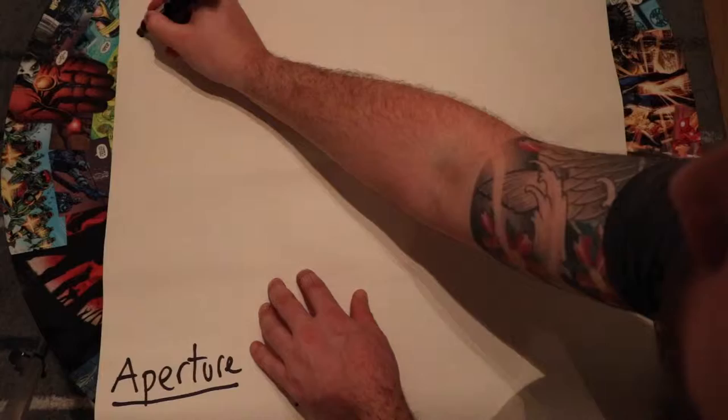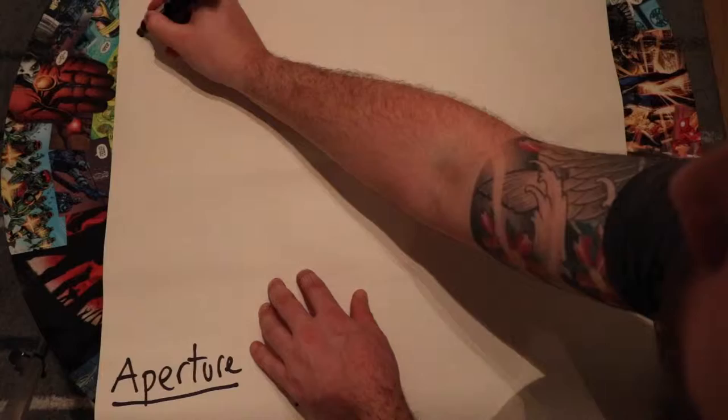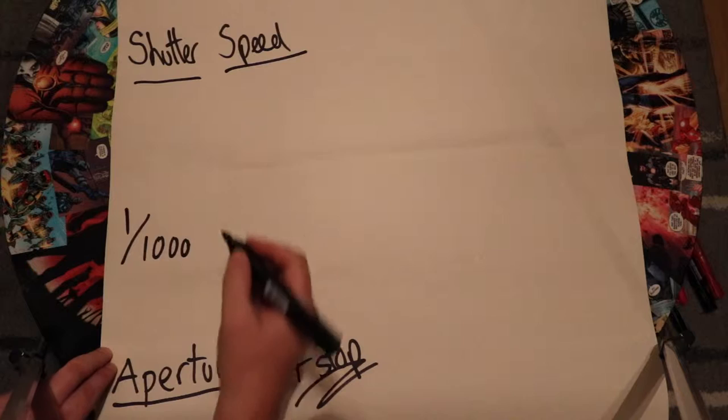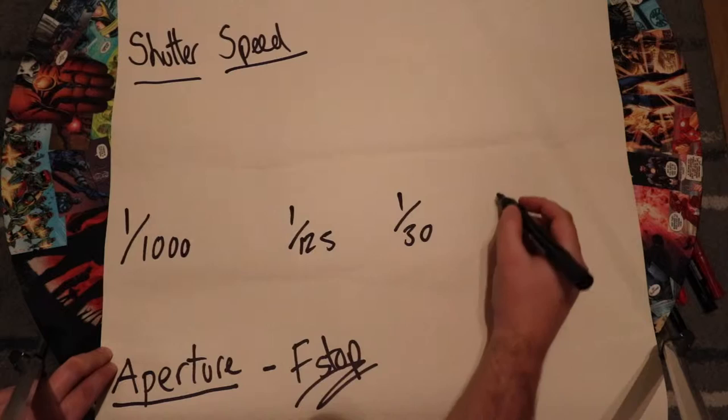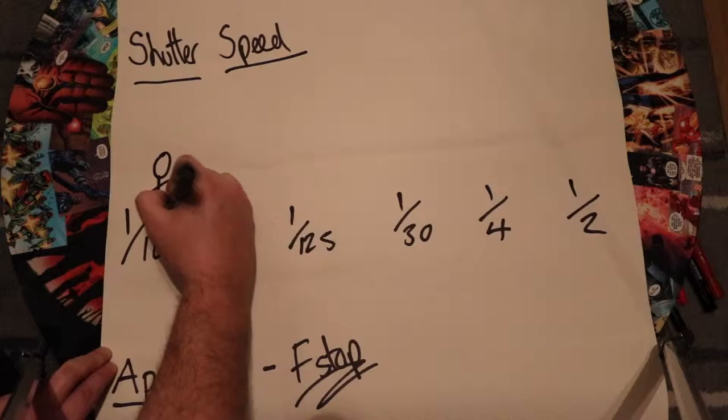Shutter speed — it is what it says: it's the amount of time the shutter is open on your camera. You can get a lot of different effects by changing the shutter speed — you can freeze things in motion, you can get some movement shown, or you can get a really nice clean looking line using a slow shutter speed.